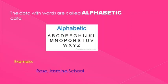The data with words are called alphabetic data. Here are some examples for alphabetic data: Rose, Jasmine and School.